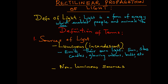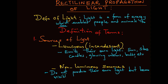Non-luminous sources do not produce their own light but become visible when light from luminous bodies is reflected on them, like the moon.